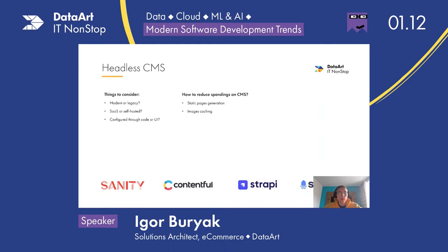Continuing to compare those platforms: one big advantage of Sanity is that its admin panel can be embedded in your admin tool — it is provided as an NPM package, so you can import it and use it in your single page application without limitations. Unfortunately, Contentful cannot do this. Contentful provides a less modern extensibility model: if you need to develop an application, it's a separate application embedded in an iframe. Sanity is a single page application built on React, so you can make a lot of changes, and it's more developer-friendly.